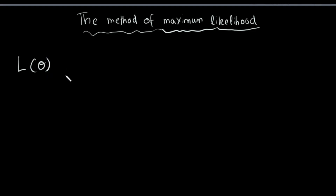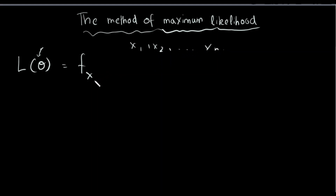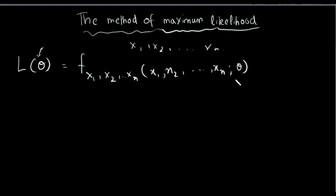So if we define L(theta), we will define one parameter. Then we will define f(x) with x1, x2, ..., xn as random variables. We will define the function of the theta parameter.